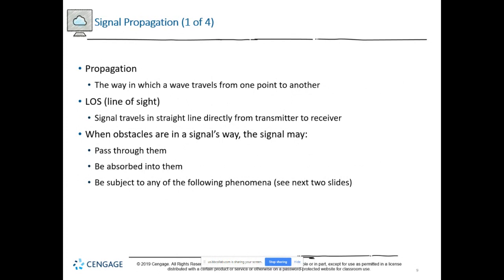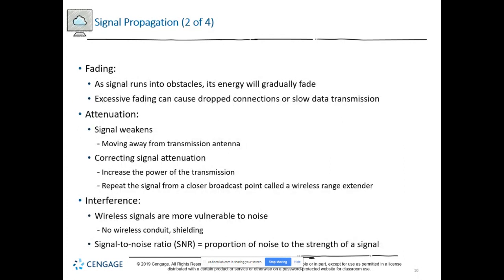Range is the geographical area a signal can reach. Propagation refers to how a wave travels from one point to another. Radio waves travel in a straight line from transmitter to intended receiver — this is called line of sight. But because the atmosphere is an unguided medium, the path isn't always clear. Radio waves don't necessarily go in a straight line; they bounce around, hit things, and go through things, and they're not quite the same when they come through.